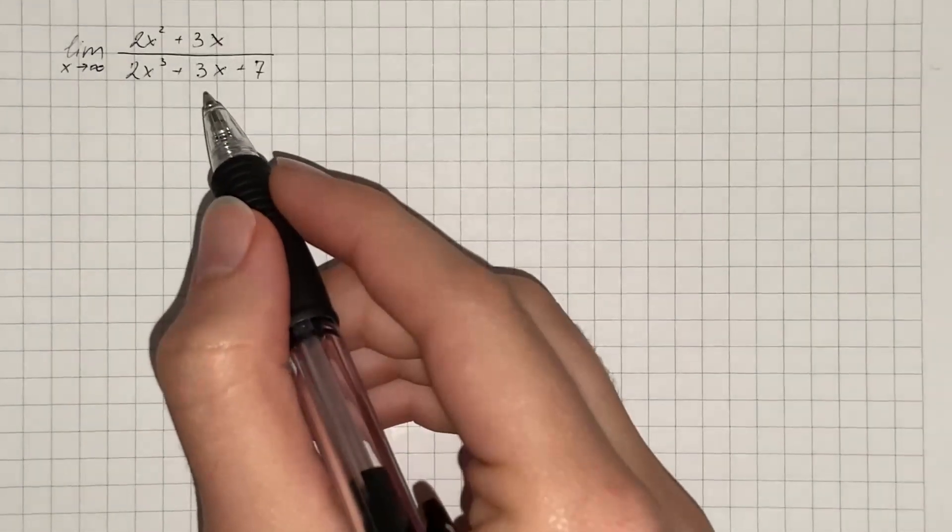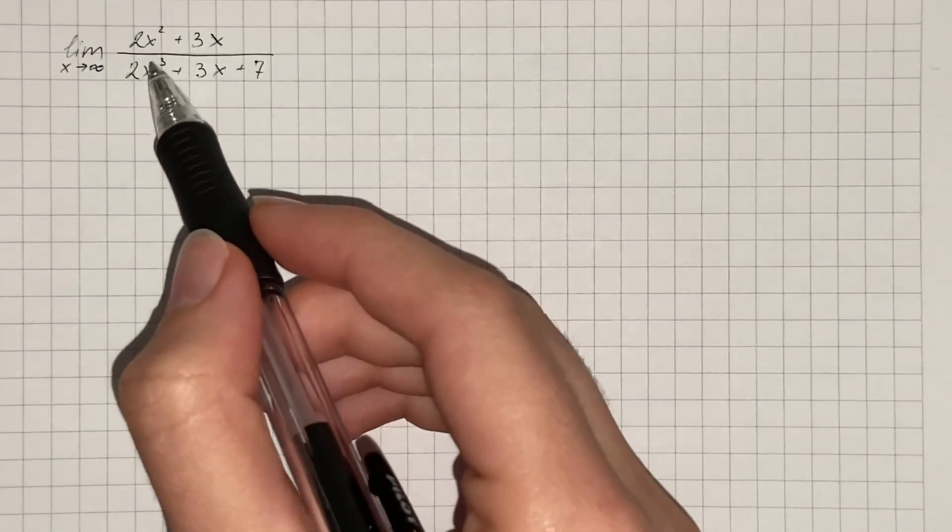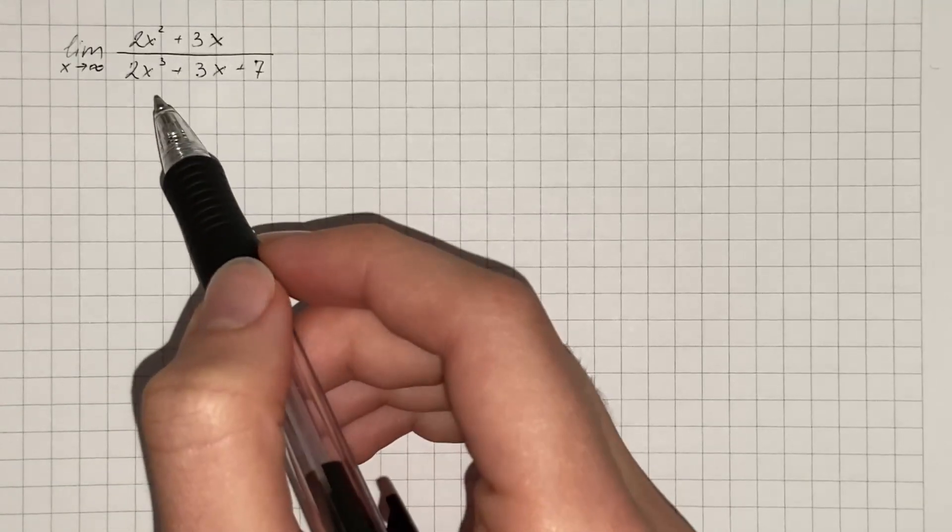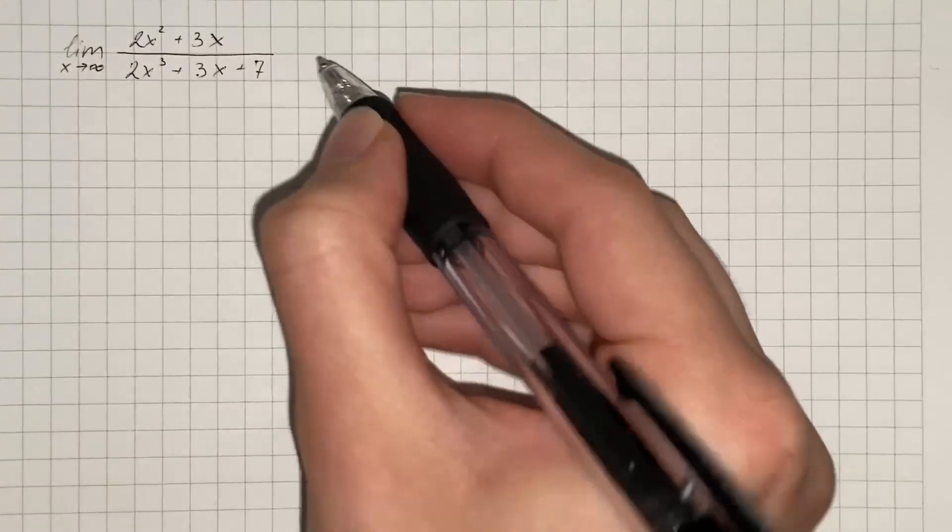We have to evaluate the given limit, and if we just substitute x by infinity, we get indeterminate form infinity over infinity. So here we're going to apply L'Hôpital's rule.